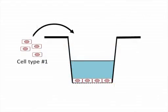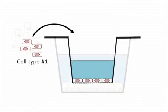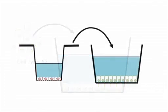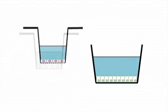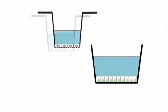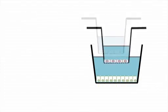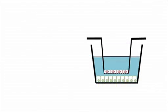We start by seeding cell type number one in inserts and seeding cell type number two in a multi-well tissue culture plate. The second step is to transfer the inserts into the wells of the plate containing cell type number two.